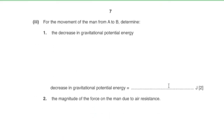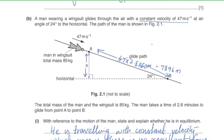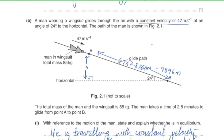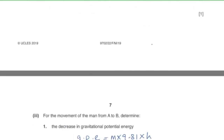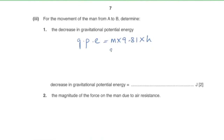Part three: determine the decrease in gravitational potential energy for movement from A to B. GPE = mass × 9.81 × height = 85 × 9.81 × 3200, which gives 2.7 × 10⁶ joules.